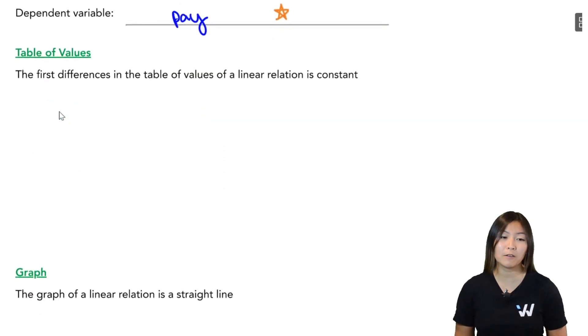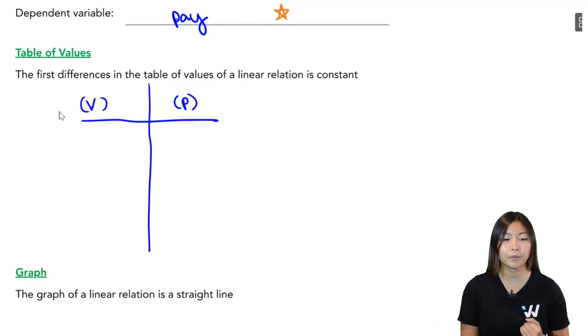First, we can take a look at a table of values. So what we want to do is we want to create this table that has the independent variable, which is the number of views and the dependent variable, which is how much they get paid. So I'm going to create this little table here. So let's say I have zero views. How much does this person get paid? Well, they're not going to get any money. They get zero dollars.